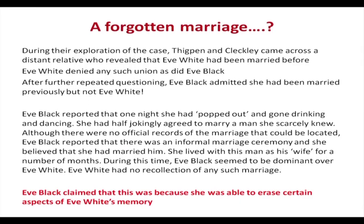When Eve Black was questioned about the marriage in the altered state, she said that yes, there had been a marriage — but only Eve Black was the bride; Eve White was not aware. She mentioned that after a wild night out of partying, she had almost jokingly gotten married in an informal ceremony with a guy and had lived with him for several months. During this time, Eve Black had been more dominant and Eve White was as if not present at all. Eve White had no recollection of the marriage, and Eve Black claimed she had been able to erase it from Eve White's memory.